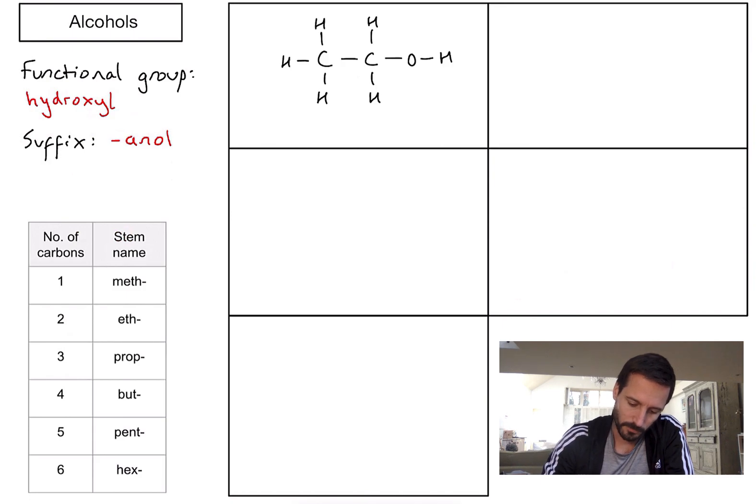Let's take a look at some examples. There's my hydroxyl group on the right hand side, so it's definitely going to be an alcohol. The first thing we need to do is count the number of carbons in the main chain. In this case it's one, two, so the stem part of my name is going to be eth. Let's write that down. Because it's an alcohol, it's going to end with -anol, so in this case it's going to be ethanol.